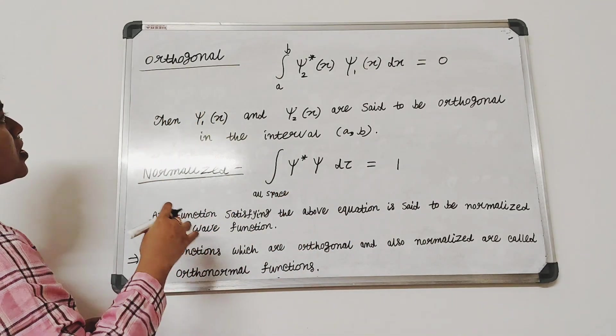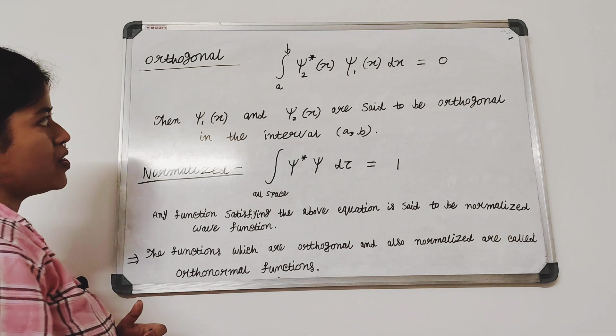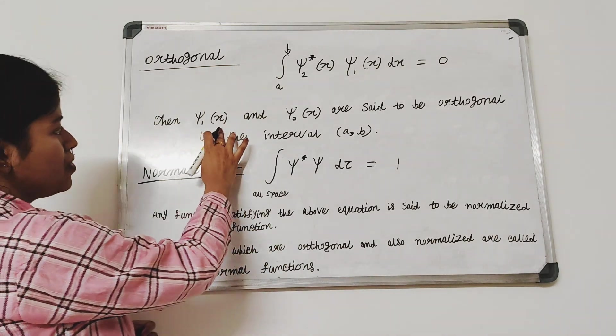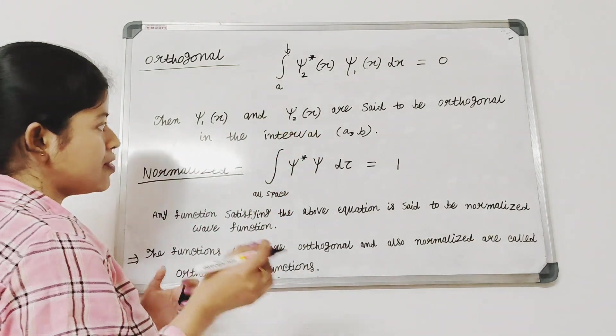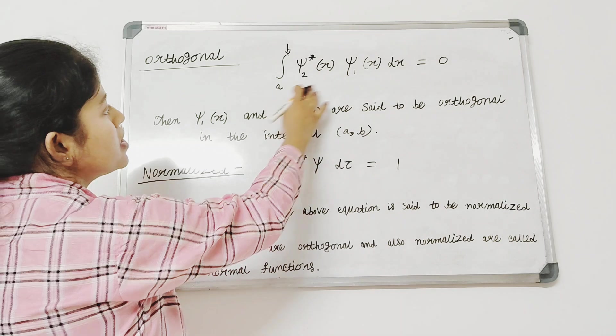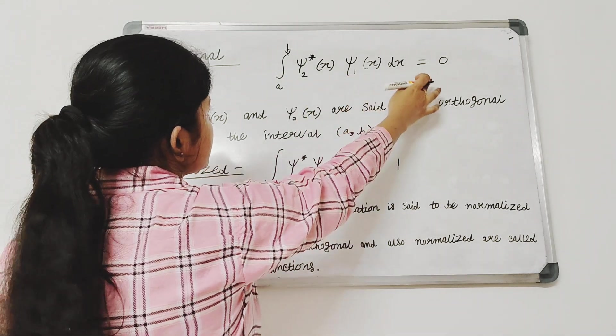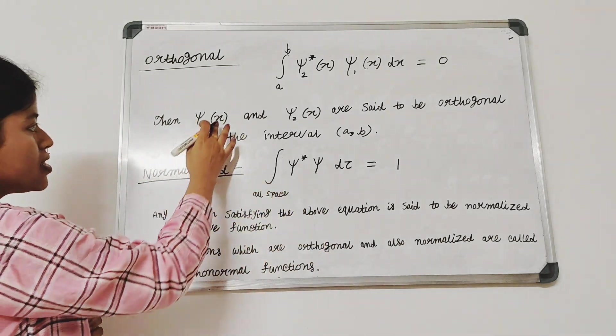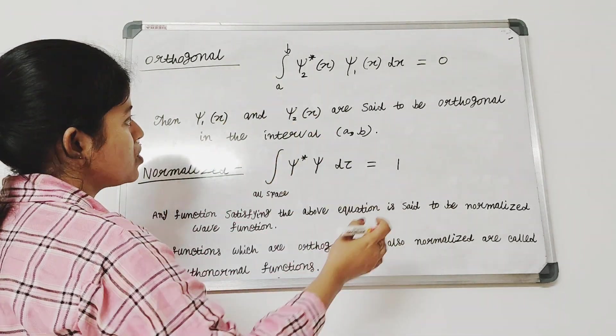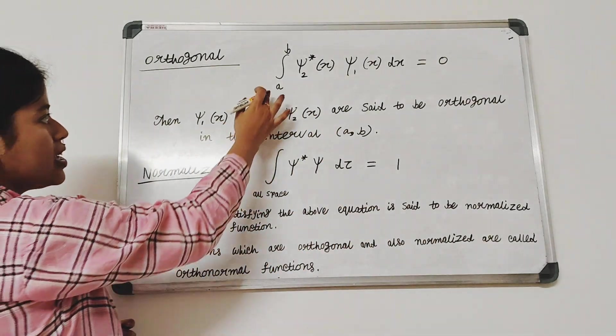The first property we are going to discuss is orthogonal property of wave function. If psi 1 of x and psi 2 of x are two wave functions and if they satisfy this property that integration a to b psi 2 star x psi 1 of x dx equals 0, then psi 1 of x and psi 2 of x is said to be orthogonal in the interval a to b.